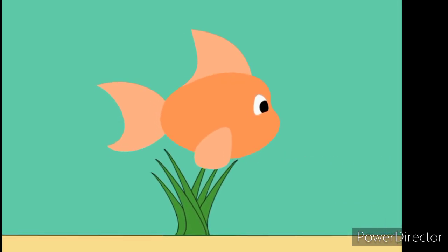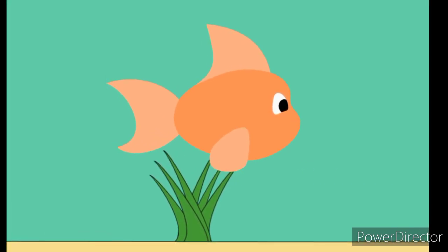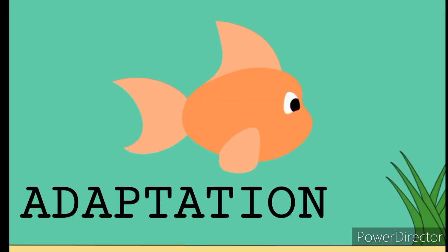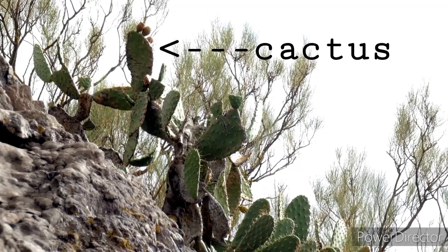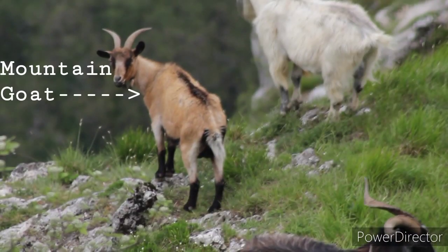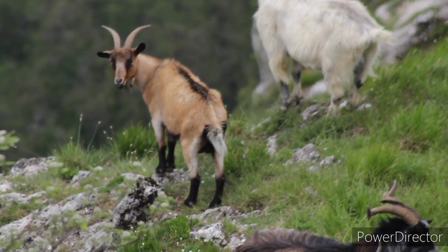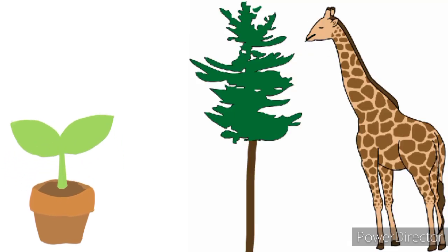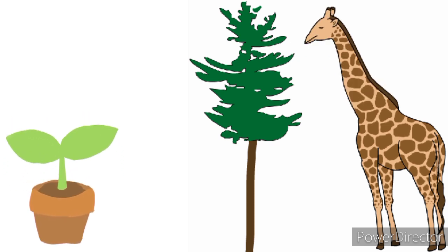Hi everyone, welcome back to Natural Biology. In today's video we are going to discuss the biological term adaptation. Have you ever thought about how a cactus plant survives in a desert habitat, or how a mountain goat protects itself from a predator? The answer is quite simple: all organisms, including plants and animals that live in a particular habitat, have changed over millions of years to suit the place they live in. This is called adaptation.